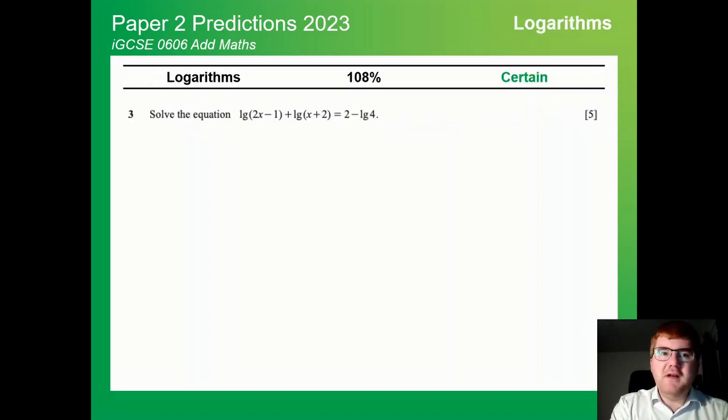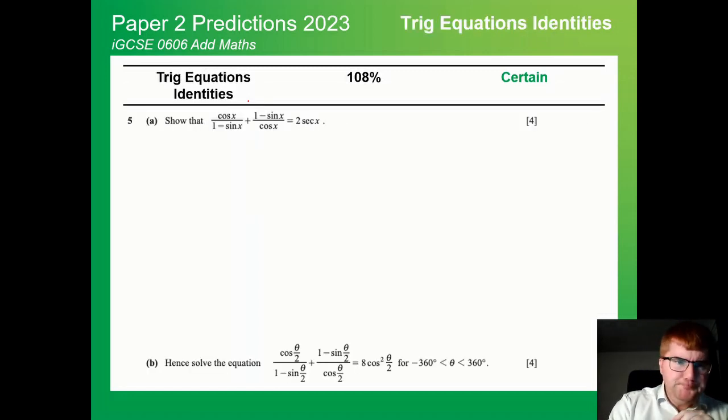Logarithms again appeared on paper one, appears a lot on paper two. Notice you start getting this notation LG, so just be familiar with that with the AdMaths course. But they could ask you a ton of different styles of question but appears quite a lot on the paper two. Trig equations identities was on paper one, also on paper two as well. Again the questions don't vary too much between the two papers, but you can see you've got a little bit of identity work here in order then to solve this quite tricky trig equation down below.